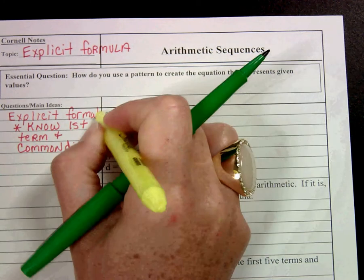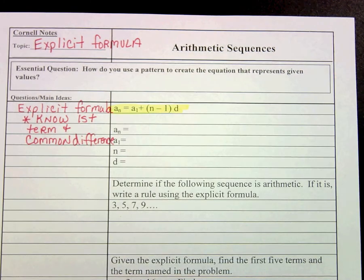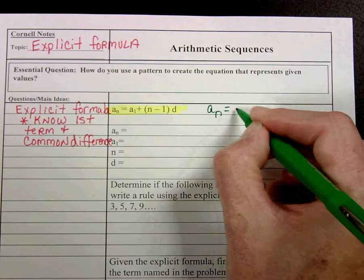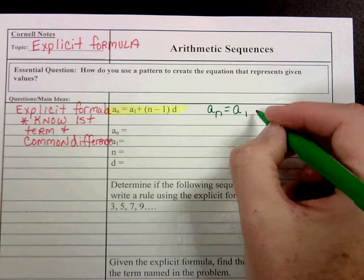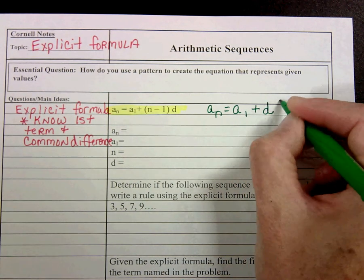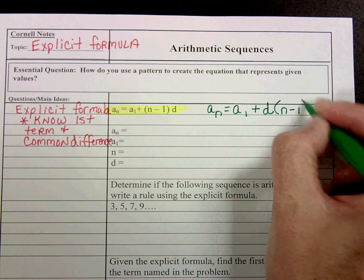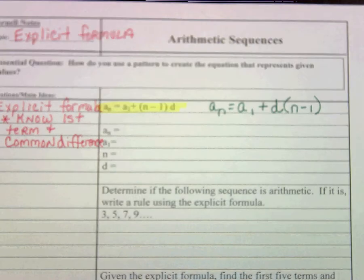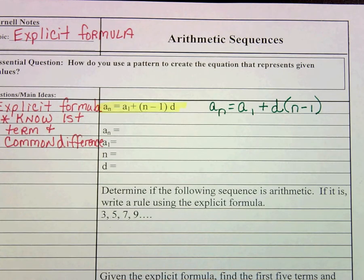So here is the recursive formula, a sub n equals a sub 1 plus n minus 1 times d. Now, I'm going to go ahead and show you, this d, we're probably going to be more comfortable with it in front of the parentheses, but there's really no difference. It's the same thing. It's still telling us to multiply that d times the n minus 1. So let's talk about what everything means.